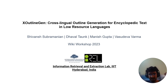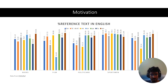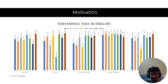Hi, I am Shivani Subramanian and I am presenting our paper X-Outline-Gen, which is cross-lingual outline generation for encyclopedic text in low resource languages. The main motivation behind this paper and cross-lingual generation in general is the lack of existing internet content in low resource languages.